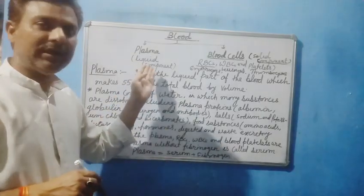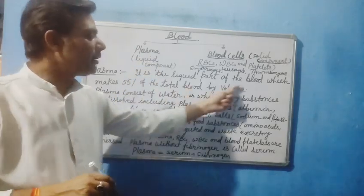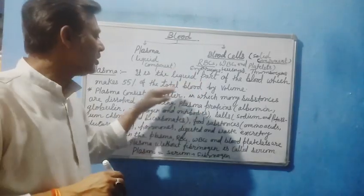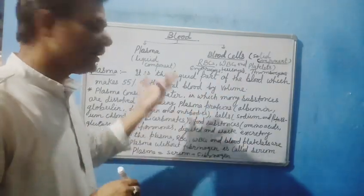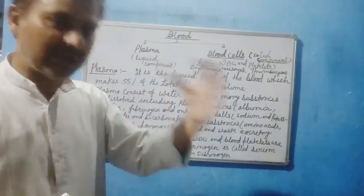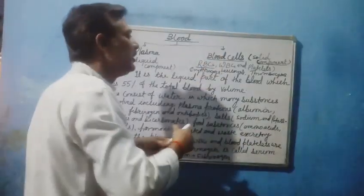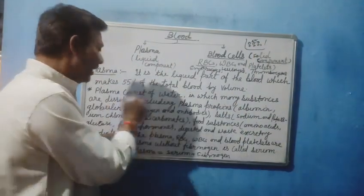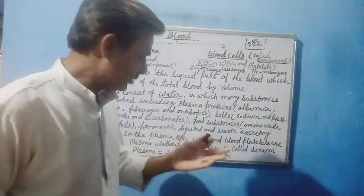The liquid component is the blood plasma, and the solid component is the blood cells. The plasma is the liquid part of the blood which makes 55% of the total blood by volume. The plasma mainly consists of water — about 90% water — and plasma proteins and food substances.